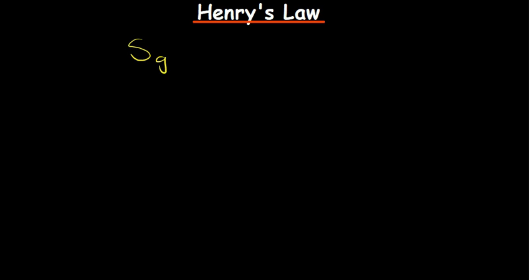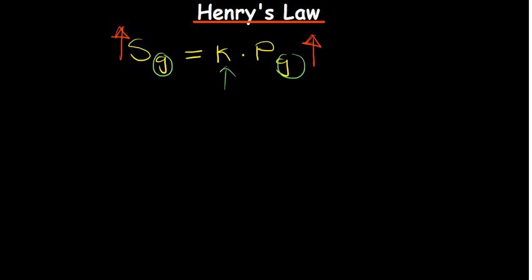Let's talk about Henry's Law of Solubility. The basic idea behind Henry's Law of Solubility is that the solubility of any given gas is directly proportional to the partial pressure of that gas. Here, the subscript g denotes the gas and k denotes the Henry's Law constant.